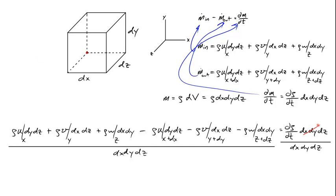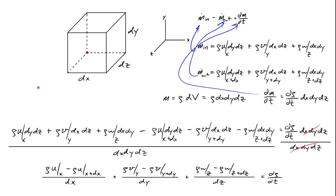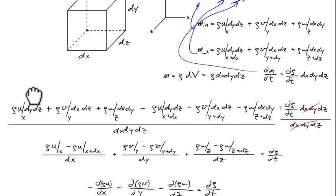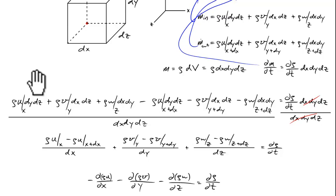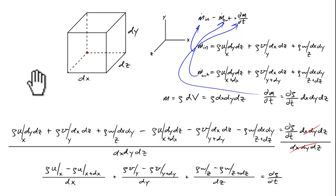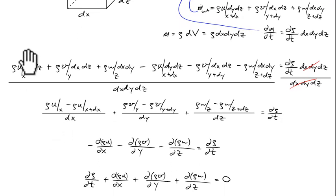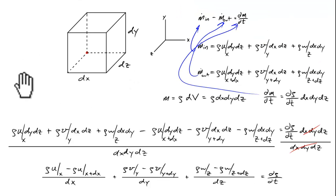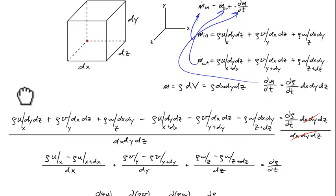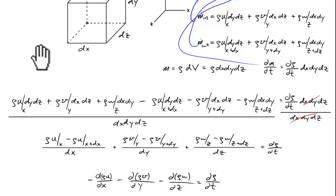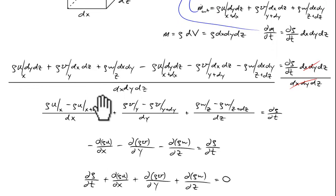Dividing both sides of the equation by dx dy dz, the right-hand side reduces to d rho/dt, and each remaining term retains one differential length. After canceling and rearranging, we have the density-velocity product evaluated at x minus that at x plus dx, and analogous terms for y and z. Because we're dealing with differential lengths in the limit as dx, dy, and dz approach zero, these become partial derivatives, giving us the continuity equation in its traditional form.